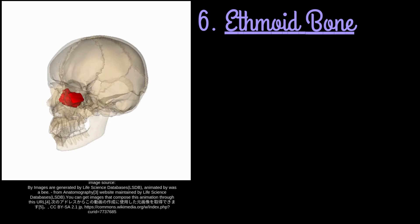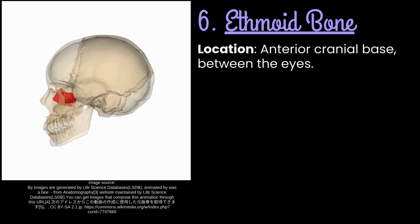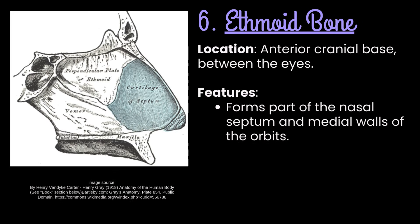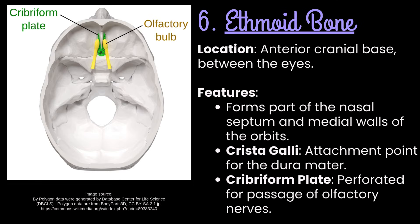Number 6: Ethmoid bone. It is located in the anterior cranial base, between the eyes. It forms part of the nasal septum and medial walls of the orbits. It has the crista galli, the attachment point for the dura mater, and a cribriform plate that is perforated for passage of olfactory nerves.